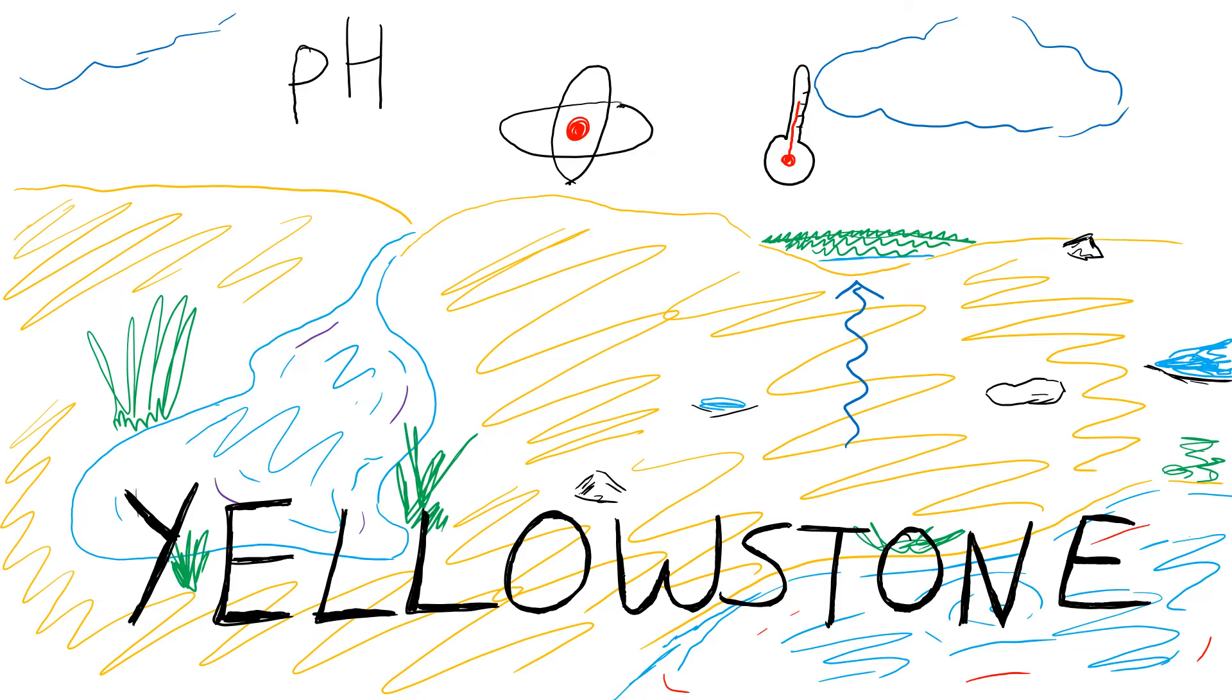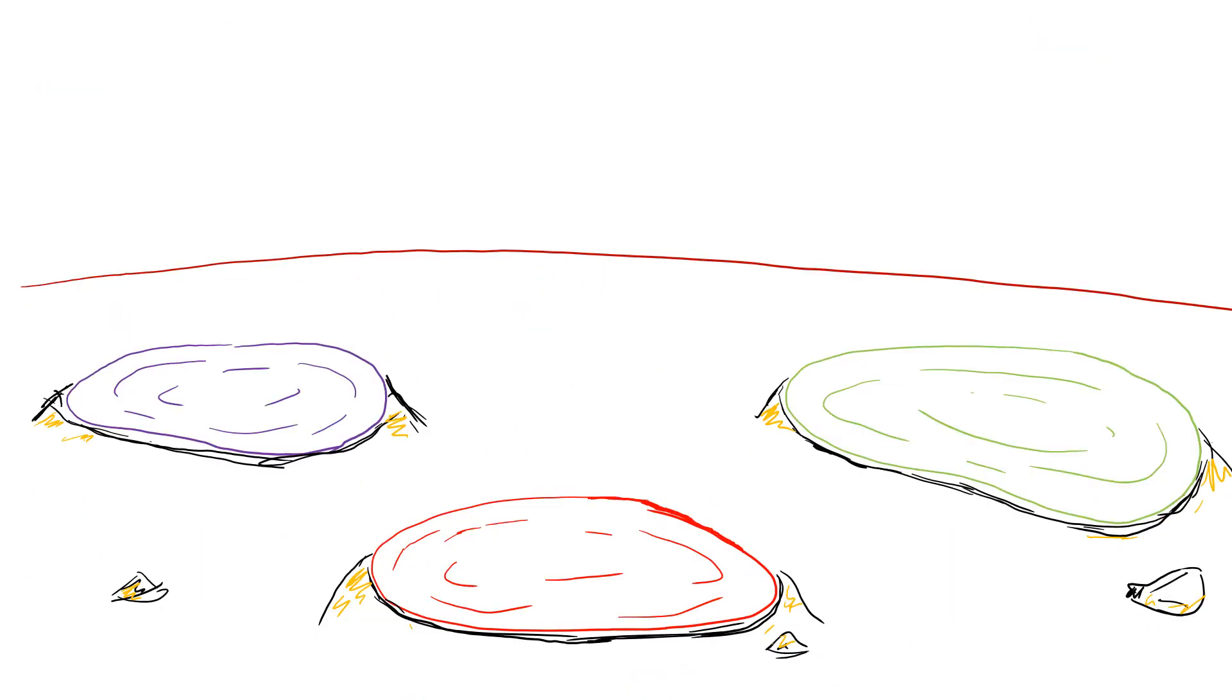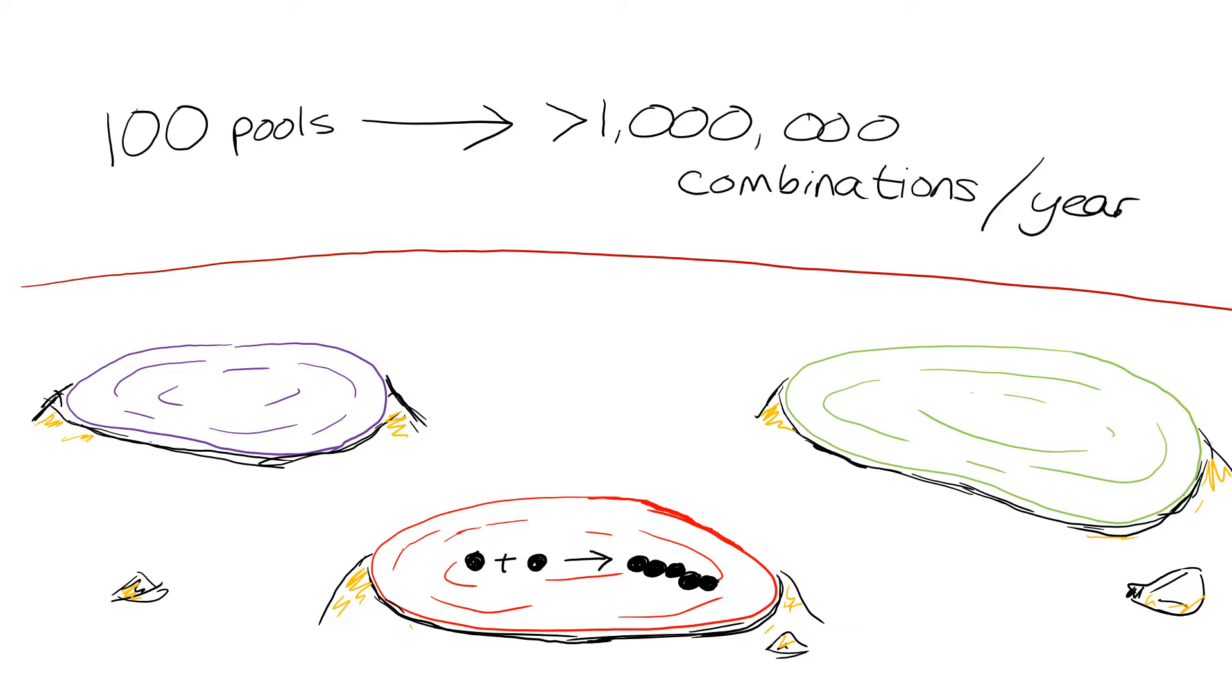All these different pools can be seen as little innovation pools for life to experiment in and discover what the perfect conditions are for life to form. There is heat and chemical energy and enough different compounds to form complex molecules. When you do the math, a hot spring environment of 100 pools can produce a million or more combinations of conditions a year. FYI, Yellowstone has over 500 hot springs.